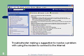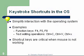The Troubleshooter makes suggestions to solve problems, such as using the modem to connect to the internet. The Microsoft website is again very useful. Oftentimes Google will take me back to the Microsoft website. Keystroke shortcuts in the OS can be very helpful, simplifying interaction with the operating system. Examples include function keys, F4, Ctrl+C, Ctrl+V, Ctrl+X. These shortcut keys are critical when the mouse is not working — if for some reason your mouse doesn't work, you can always use keyboard shortcuts to get around.